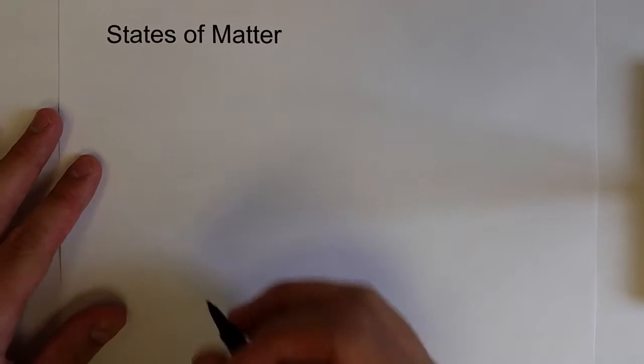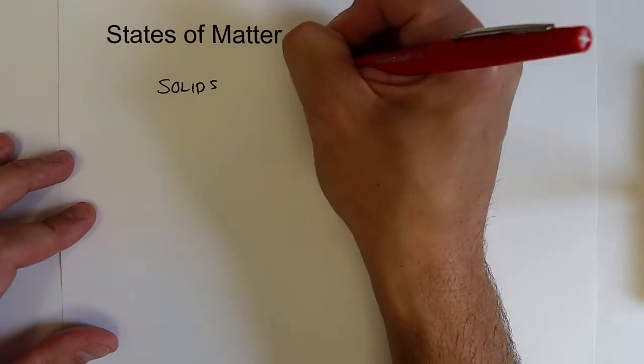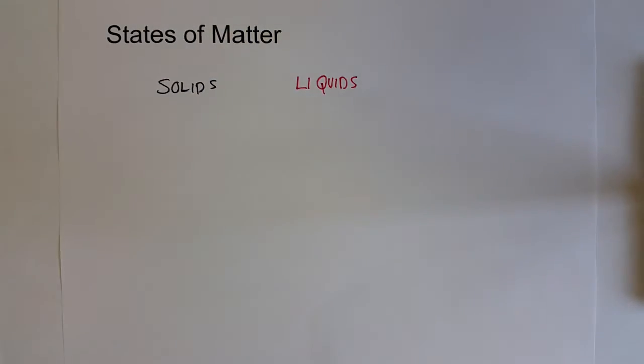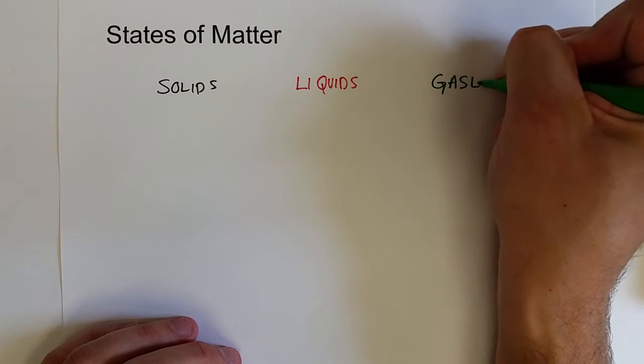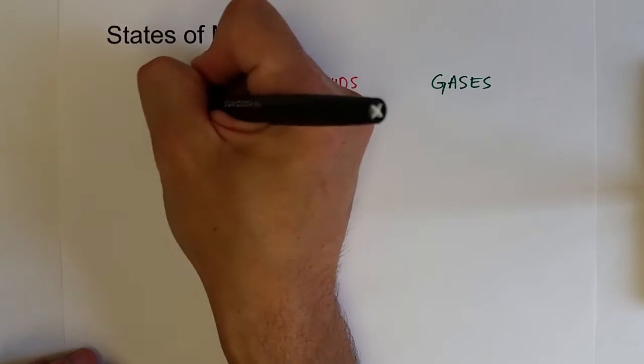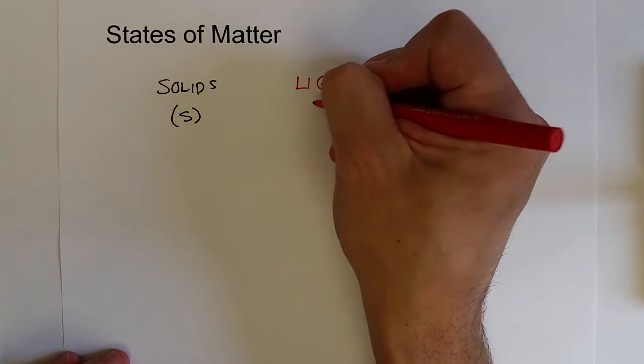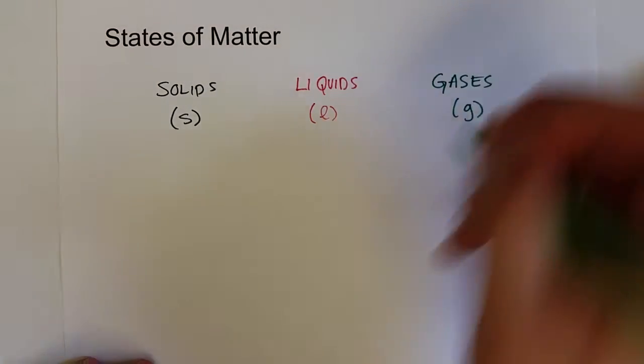So of course we've got solids, liquids, and gases, which when we show those abbreviations we would use S for solids, L for liquids, and G for gases.